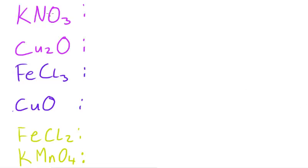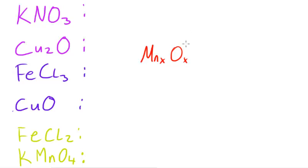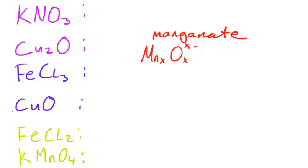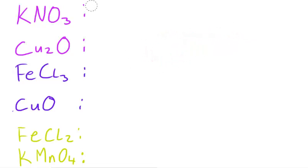I'm going to work through the systematic names for these, but before I do that you can pause the video and try to work them out yourselves. Just so you know, if you have a formula like MnO with some charge, you call that ion a manganate ion — similar to how you have sulfate or nitrate.